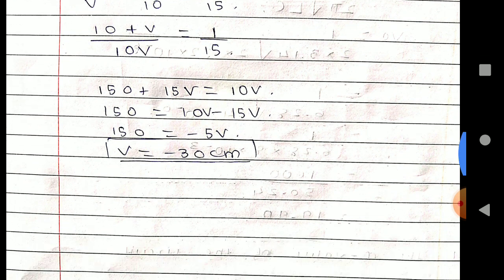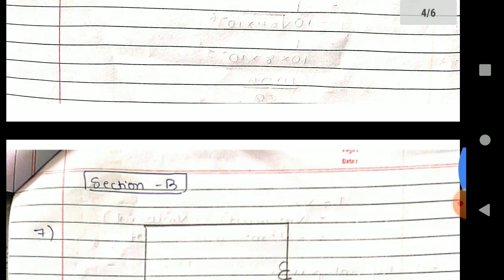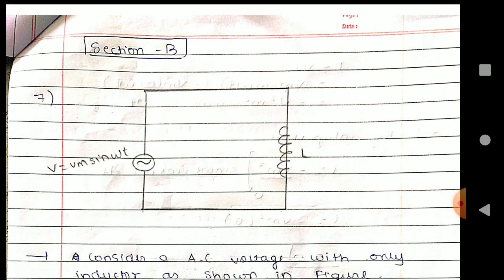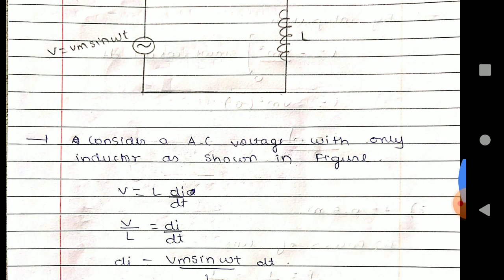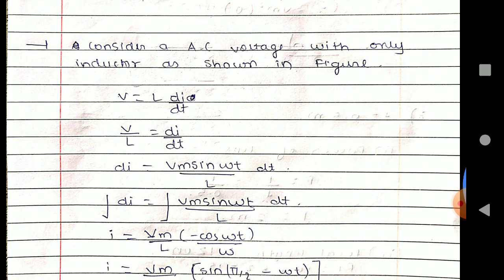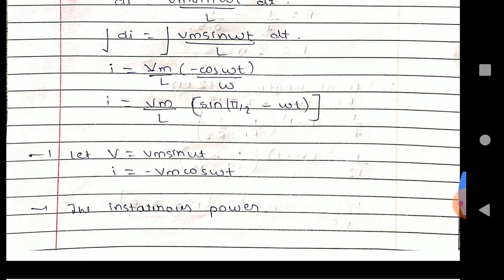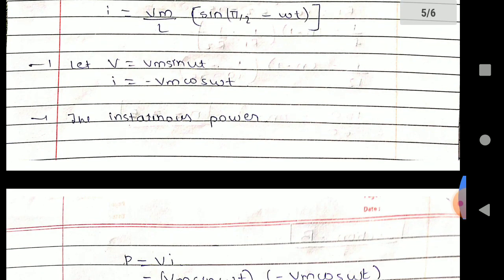Section B: Consider AC voltage with only inductor as shown. Very easy, it will be very easy for you, just go through it. This is the thing. Let V equals Vm sin ωt and i equals Im cos. The instantaneous power...